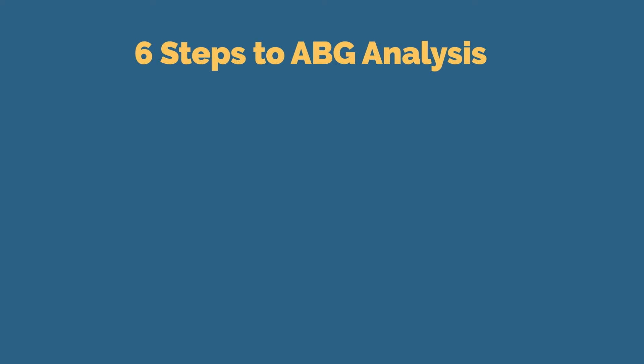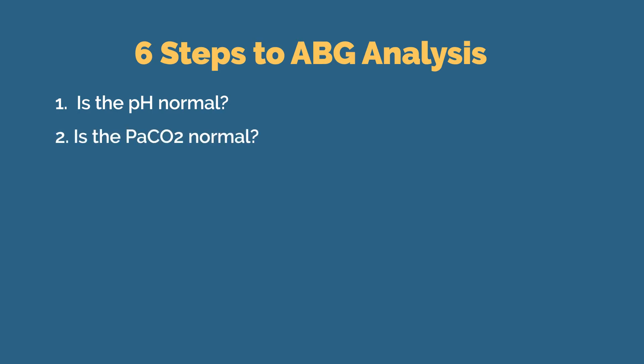Let's go through the six steps to our ABG analysis. The first step involves looking at the pH and determining if it is within normal limits. If it isn't, we then need to determine if it is high or low and label it as either acidic or alkaline. The second step involves looking at the carbon dioxide level and determining if it is within normal limits. If it isn't, we then need to determine if it is high or low and label it as either acidic or alkaline.